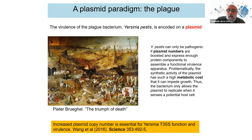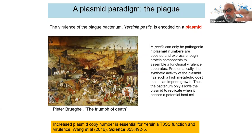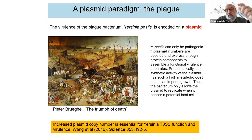It's only because the plasmid exists and increases its copy number that it is virulent, because carrying the plasmid has a high metabolic cost to the host. This idea of plasmids being important for the spread of adaptive genes like antibiotic resistance or virulence, and the cost of having the plasmid, drives most of the discussions in plasmid biology.